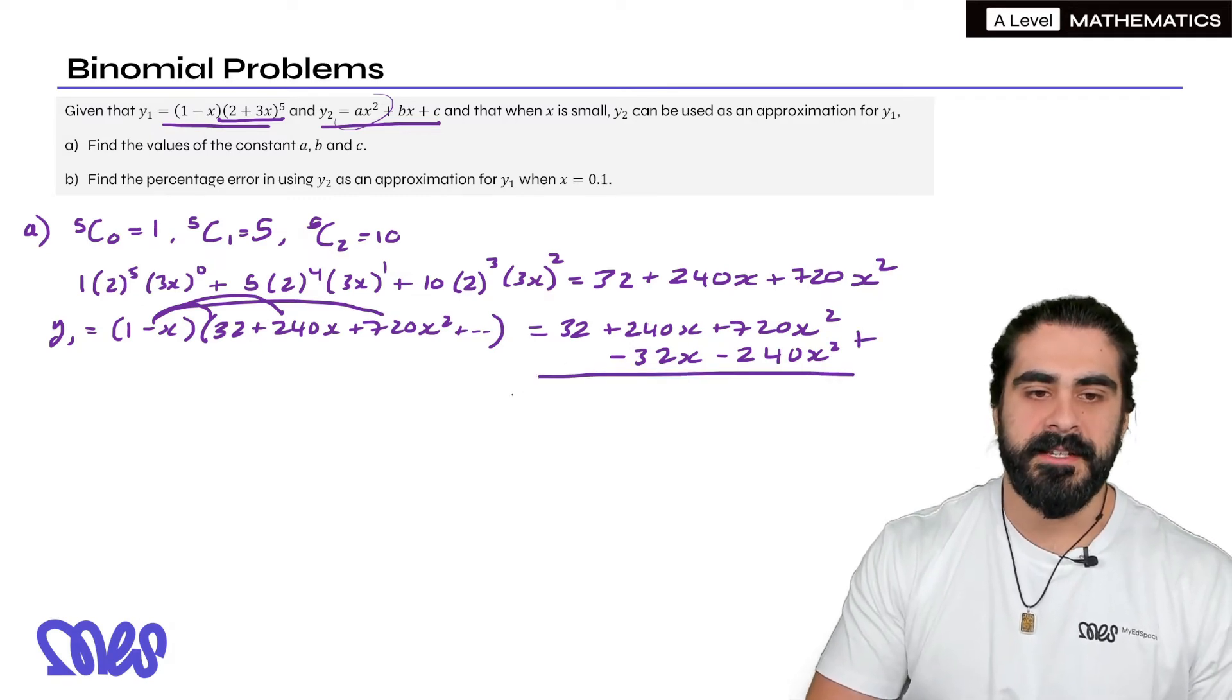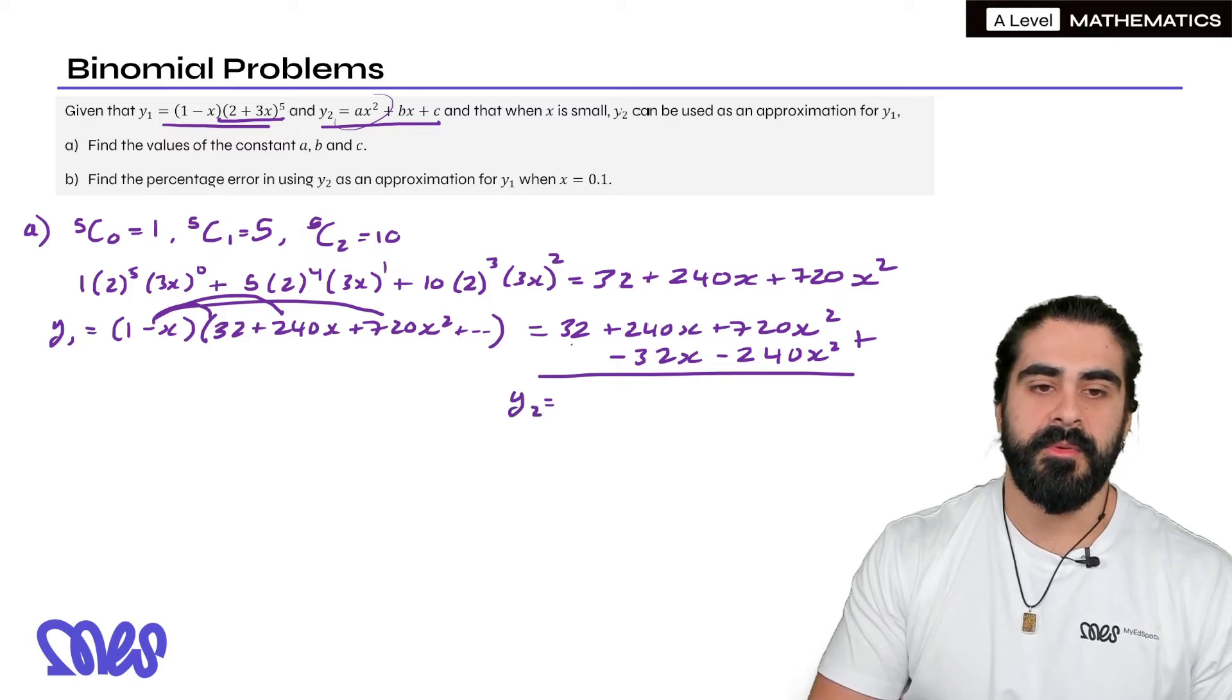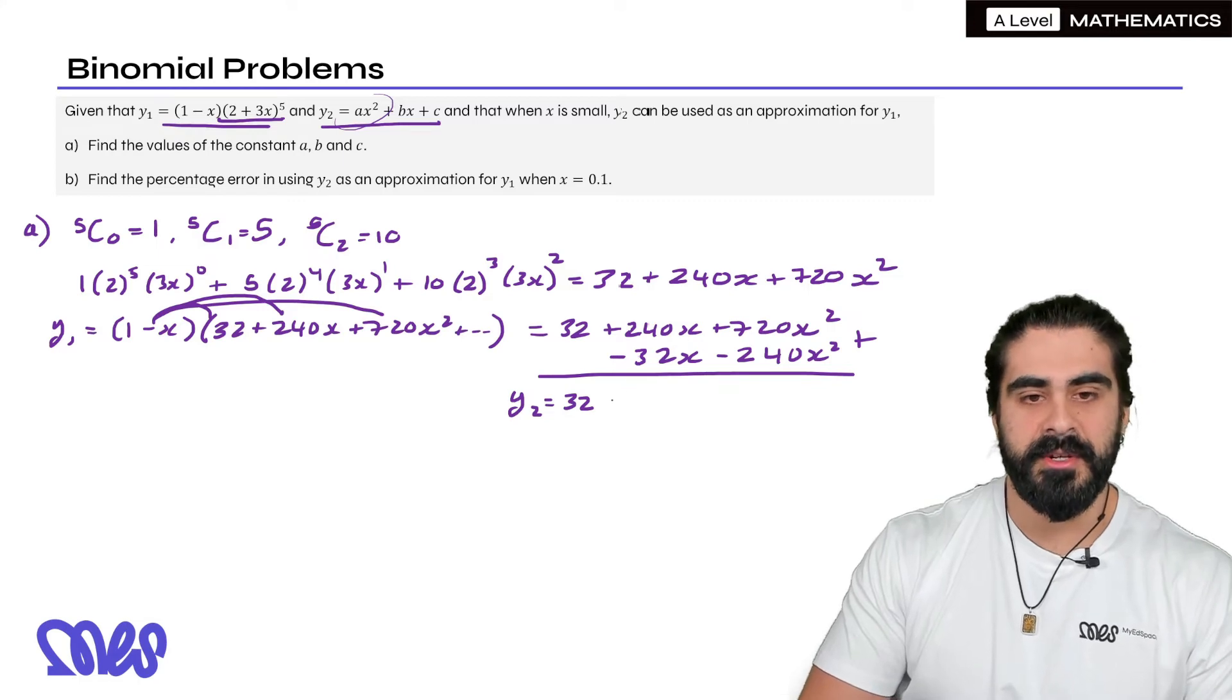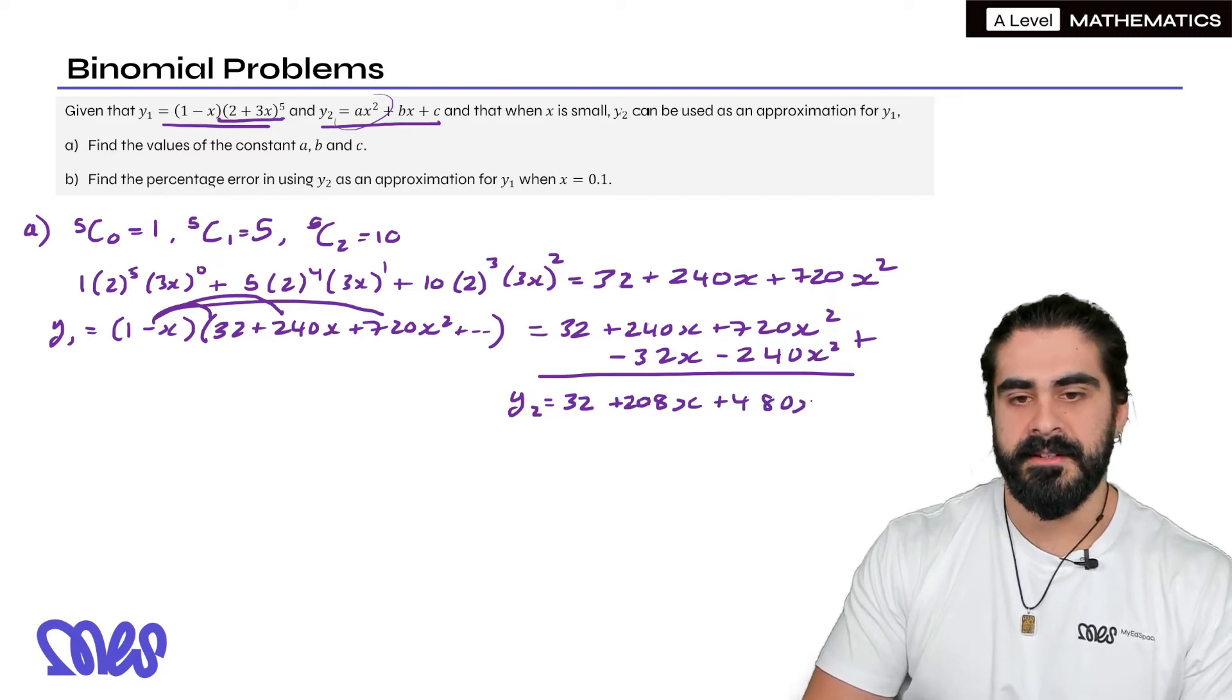So we expand it or add it. We're going to get our y2 so we get 32. Then 240 minus 32 is 208x. Then 720 minus 240 is 480x^2.